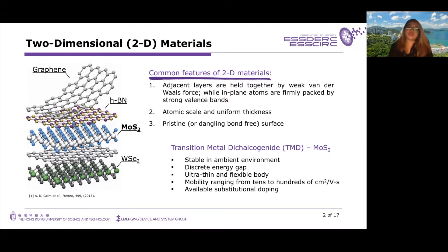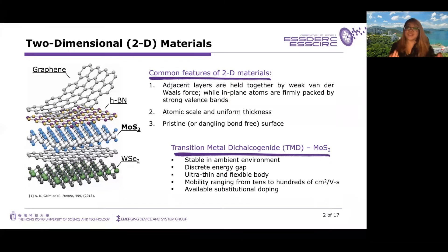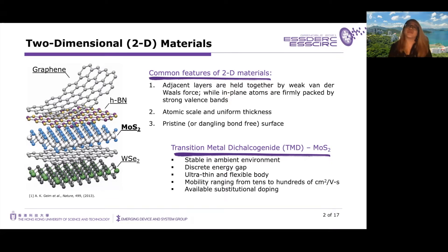These heterostructures form a good interface with each other, as the surface of 2D materials can be considered pristine or free of dangling bonds. One of the most promising transition metal dichalcogenides, or TMDs, for forming the active region of 2D field effect transistors is MoS2. This is because MoS2 is stable in ambient environment, possesses a discrete energy gap, is ultra-thin, and therefore suitable for flexible and transparent platforms. Its mobility ranges from tens to hundreds of square centimeters per volt-second.